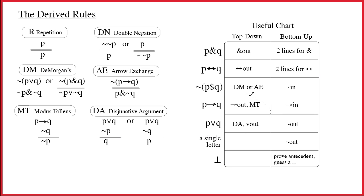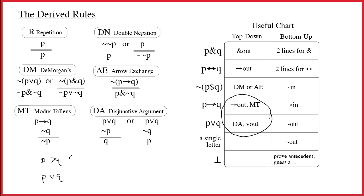All the hardest stuff happens when you have an arrow or a wedge as the main connective, and you have to think about arrow out, modus tollens, disjunctive argument, or wedge out. Sometimes in order to use these rules, you have to be creative and build the antecedent or the negation of the consequent, or you have to build half of a disjunction. These are things which you have to learn to do with time.